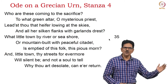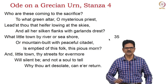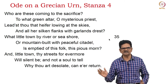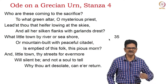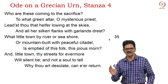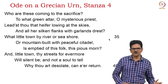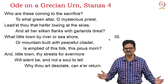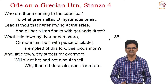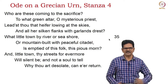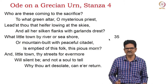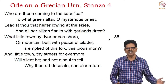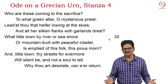Stanza 4: 'Who are these coming to the sacrifice? To what green altar, O mysterious priest, leadest thou that heifer lowing at the skies, and all her silken flanks with garlands dressed? What little town by river or sea shore, or mountain-built with peaceful citadel, is emptied of this folk, this pious morn? And, little town, thy streets for evermore will silent be; and not a soul to tell why thou art desolate, can e'er return.'